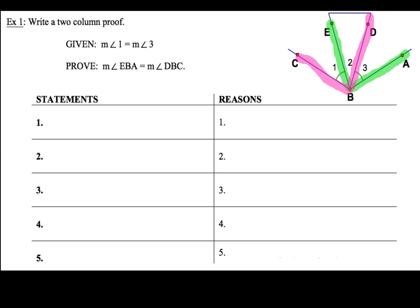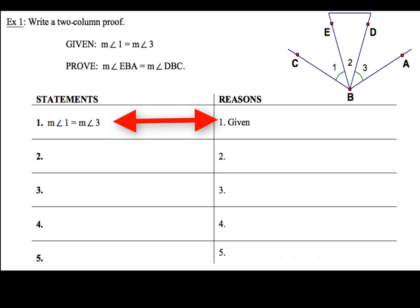Now, as in any proof, you want to start by listing the statement and reason. Step 1 is going to be the given information. So we're going to write down: the measure of angle 1 equals the measure of angle 3, and our reason is going to be 'given.'